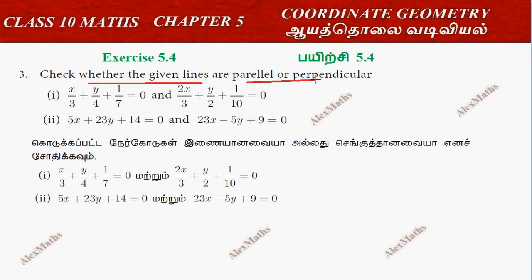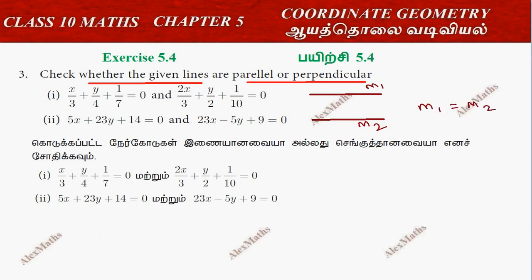Check whether the given lines are parallel or perpendicular. If parallel, the condition is m1 equal to m2. For example, in the diagram, suppose if it is our line — it is parallel — this is slope m1, this is slope m2, and m1 equal to m2 is the condition. For perpendicular, this is our line and this is m1, this is m2. The perpendicular condition is m1 into m2 equal to minus 1.